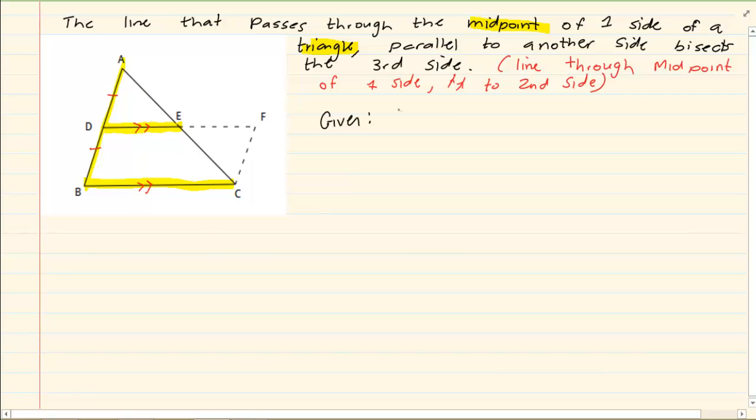Now what are we given? We are given that AD is equal to DB and we are given that DE is parallel to BC.